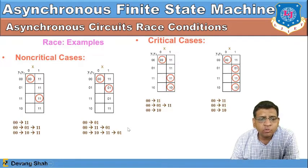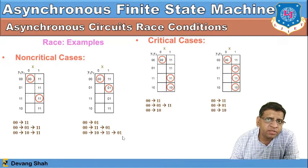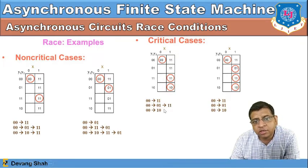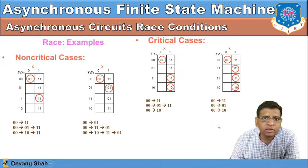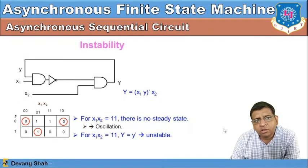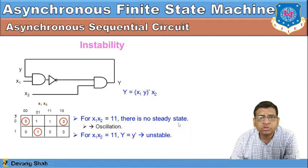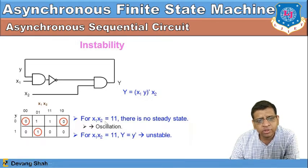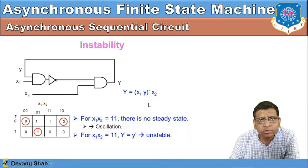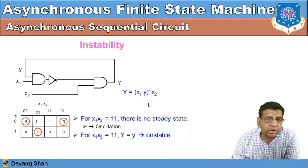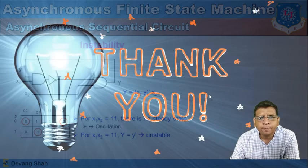In a critical race, the final steady state depends on the order of changes in state variables. Non-critical cases are when the final output remains the same regardless of the path — for example, 00→01→11 or 00→10→11, both ending at 11. Critical conditions are when the output changes completely. In the case of instability, when x1 and x2 are both 1, there is no steady state — y oscillates between 0 and 1 continuously. Your design must ensure such instability is removed from asynchronous sequential circuits. Thank you, students — please write any doubts in the comment box.